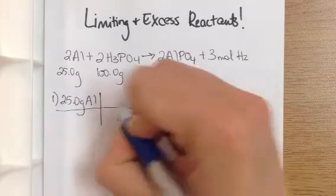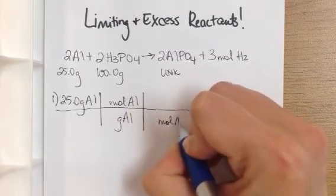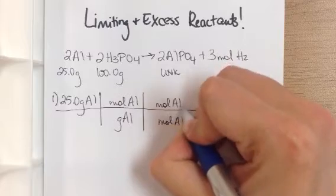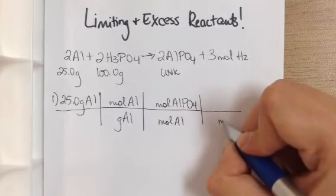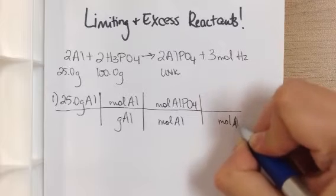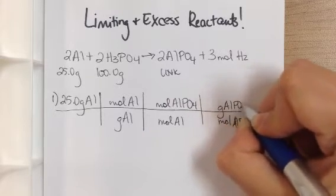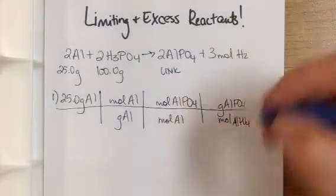In keeping with our same format for mass-to-mass calculations, I would convert to moles of aluminum first, then I can use my mole ratio to convert to moles of aluminum phosphate. And finally I can convert that to moles. You don't necessarily have to, but I'm going to in this case because it's going to apply and be important later.